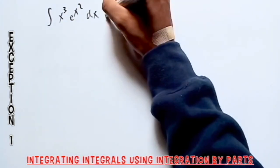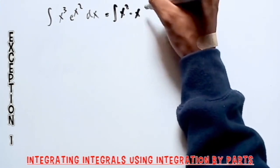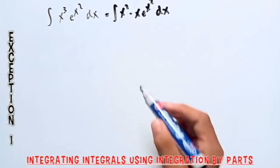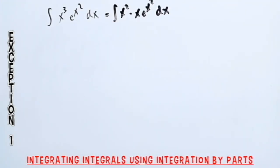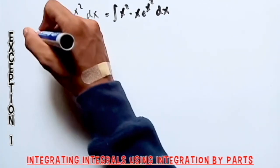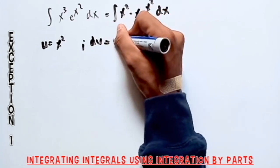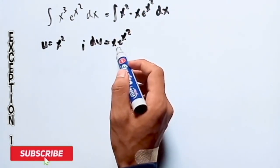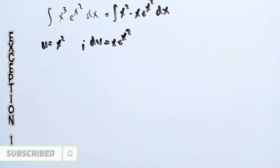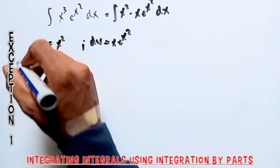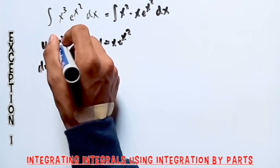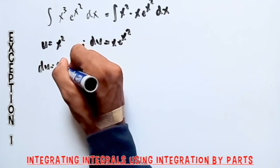But we can still perform integration by parts. We just can't use the LIATE method. So we can rewrite this integral as the integral of x squared times x e raised to x squared dx — this is still the same, I just factored out the x. Now, let's perform integration by parts. We set u equal to x squared, and dv equal to x e raised to x squared, because x e raised to x squared is now easy to integrate.